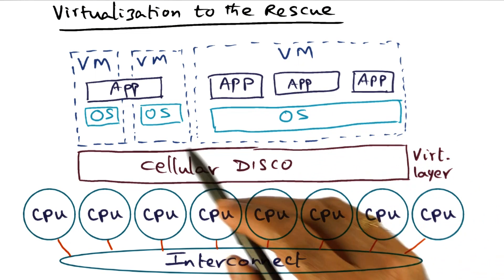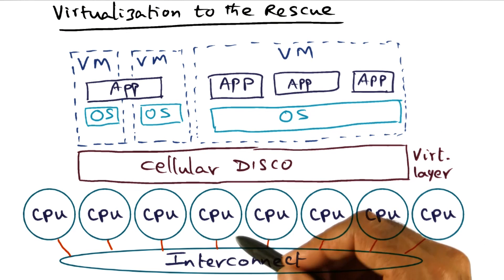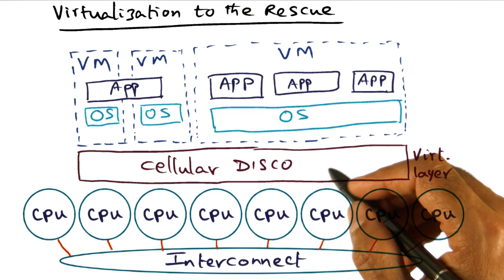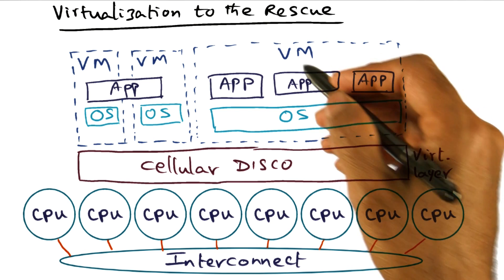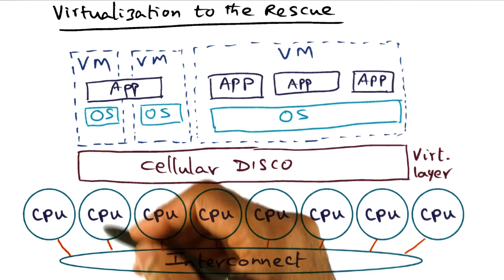Now the question is, can this idea be extended to a multiprocessor? This is the thought experiment that was carried out at Stanford in the Cellular Disco project. Cellular Disco combines the idea of virtualization and the needs for scalability of a parallel operating system commensurate with the underlying hardware.